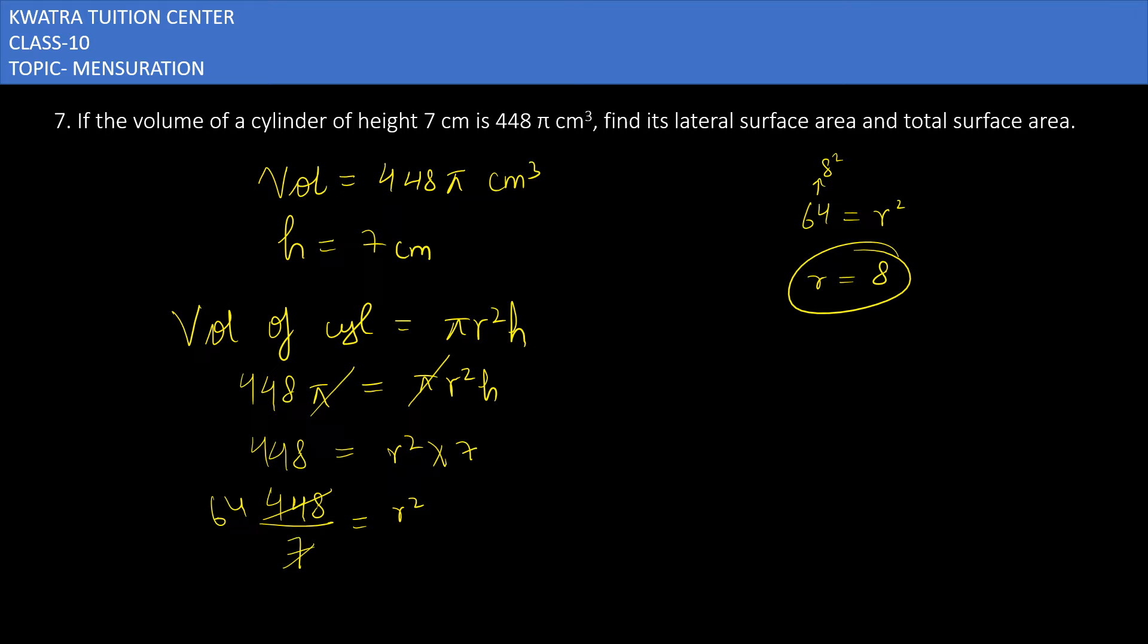R will be equal to 8, and then you have to find LSA of cylinder. LSA of cylinder is 2πrh. You can put the value of π which is 22/7, r as 8, and h as 7. Then you can multiply 2 into 22 which is 44, and 44 into 8 will give you 352 cm².